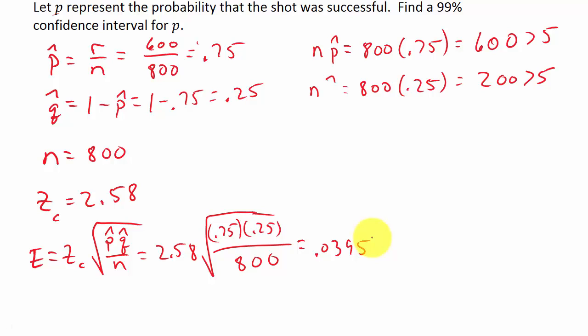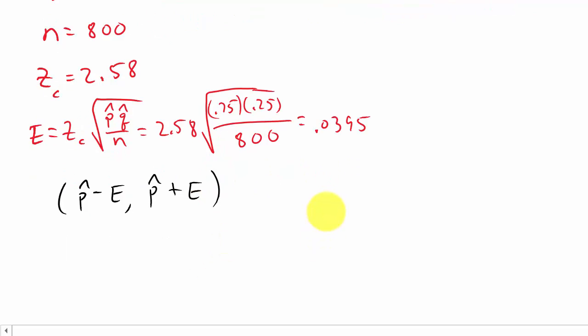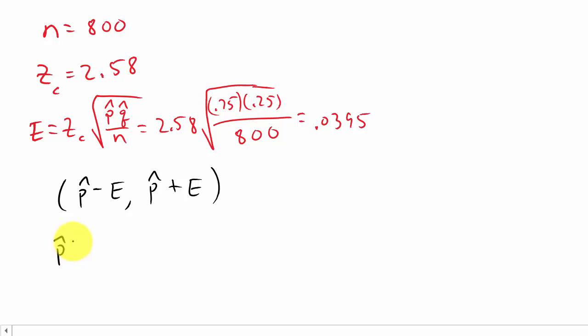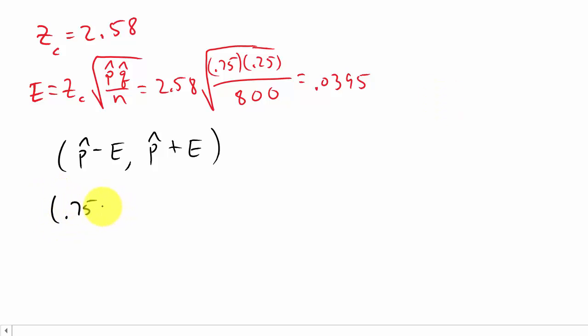So now our interval is P hat minus E to P hat plus E. In the formula back there, I had P hat minus E less than P less than P hat plus E. All I did, this is the same thing, instead of writing it as an inequality, I wrote it as an interval. We know that P hat is 0.75, so that would be 0.75 minus 0.0395 to 0.75 plus 0.0395.